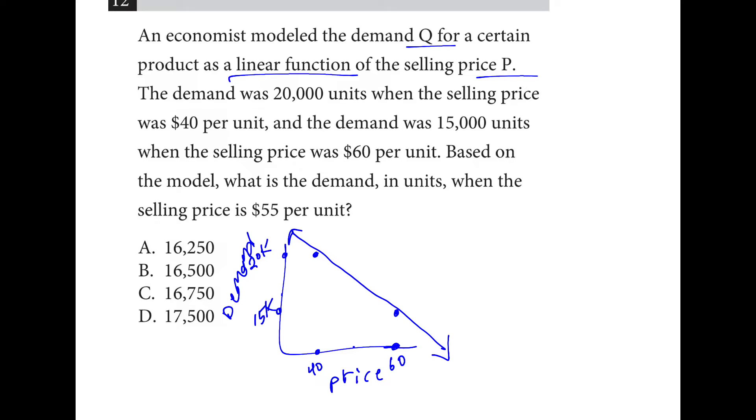So $55 is not halfway, but three-quarters of the way to $60. So think about the difference between 15,000 and 20,000. It's a $5,000 difference. So we are three-quarters of the way to the 15,000, which means we are down $3,750. So that's why the answer is A. Halfway would be $17,500, and three-quarters would be $16,250.